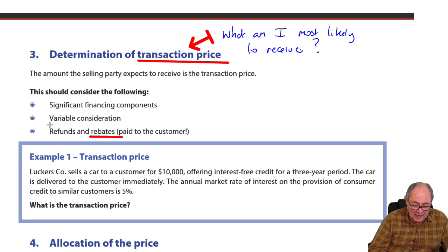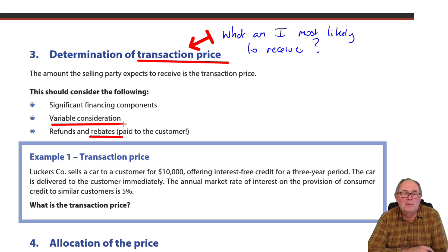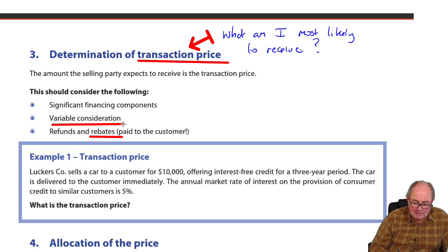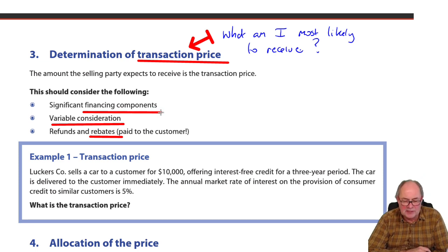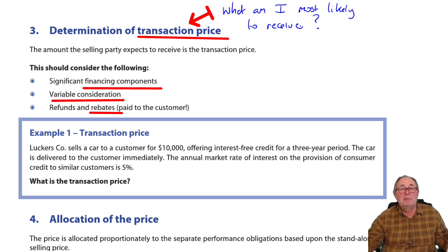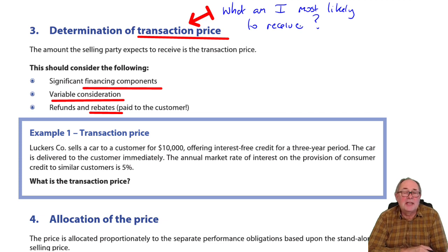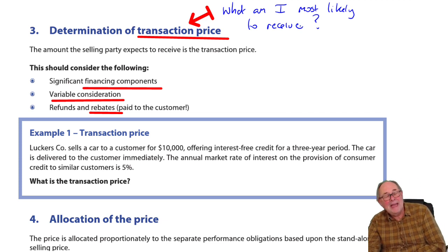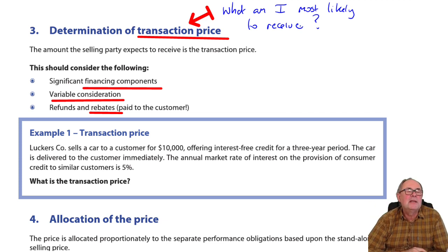Think about how consideration might vary depending on the volume of goods people are buying. Also consider where there's a big financing component, which might need to be stripped out of the transaction. In the UK, there's a major chain of furniture shops whose big selling point is four years interest-free credit. There's no such thing as interest-free credit — you'll be paying a different price because of it, and the company booking the revenue needs to separate out that price.